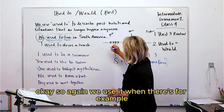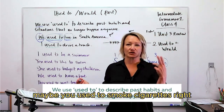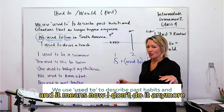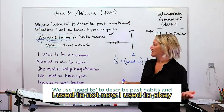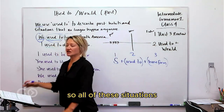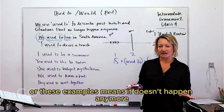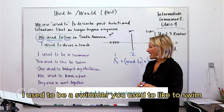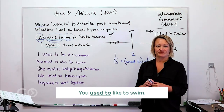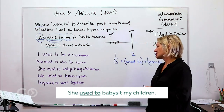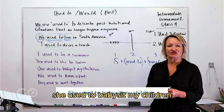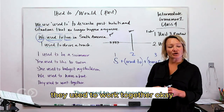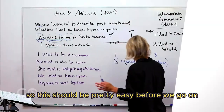We use it when something happened in the past and no longer happens now. For example, maybe you used to smoke cigarettes — 'When I was younger, I used to smoke cigarettes' — meaning now I don't do it anymore. So: 'I used to be a swimmer,' 'You used to like to swim,' 'She used to babysit my children,' 'We used to have a boat,' 'They used to work together.' All of these mean it doesn't happen anymore.